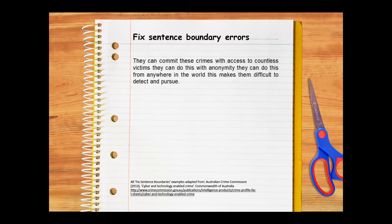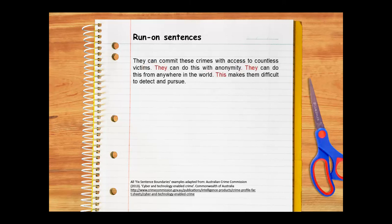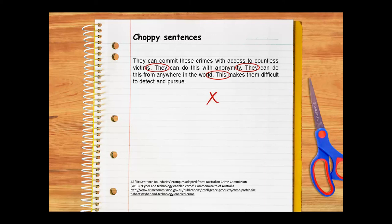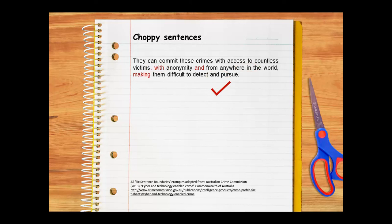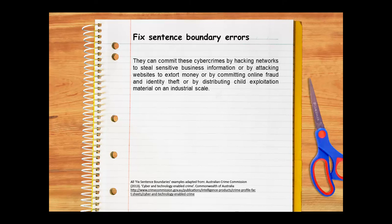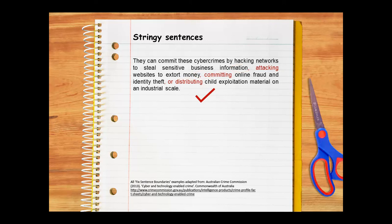Here's a run-on sentence — it includes several sentences that need to be split up. One way to fix it is using full stops, but doing so can create choppy sentences: several short sentences placed one after another that disturb the flow of writing. Try getting rid of unnecessary words and combining the ideas within one or two sentences if you can. A stringy sentence uses the same coordinating conjunction to link a number of independent clauses together. An easy way to fix a stringy sentence is to combine some ideas into a complex sentence, getting rid of unnecessary words if you can.